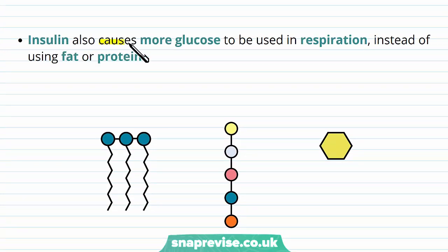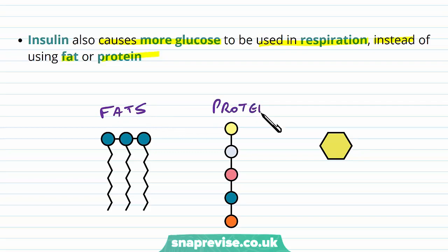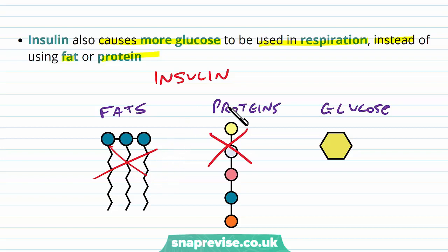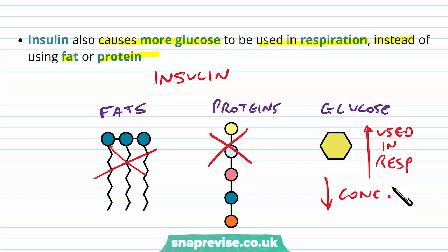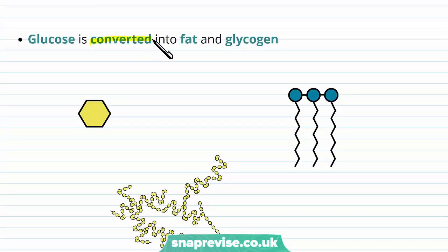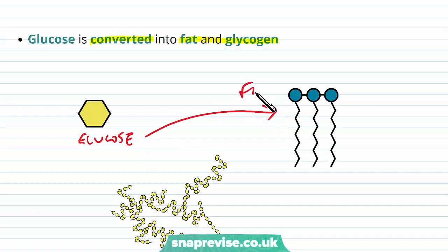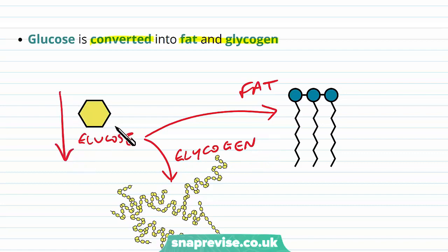Insulin also has other effects. It causes more glucose to be used in respiration instead of fats or proteins. In respiration we can use a variety of substrates, including fats, proteins, and glucose, and usually we use a mixture of them all. But when insulin is present, it stops proteins and fats from being used. So if more glucose is being used in respiration, it keeps being pushed into the cell and used, bringing the concentration back down. Additionally, insulin encourages the conversion of glucose into fat and glycogen, so glucose can be stored either as fat or added to long chains of glycogen — ultimately being removed from the blood as it's stored away.